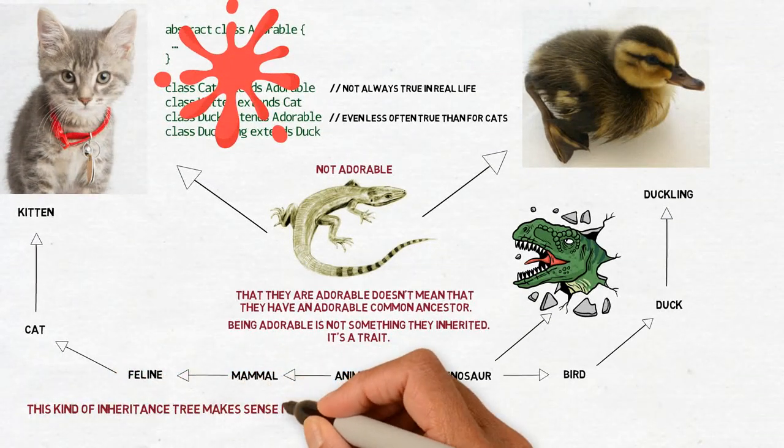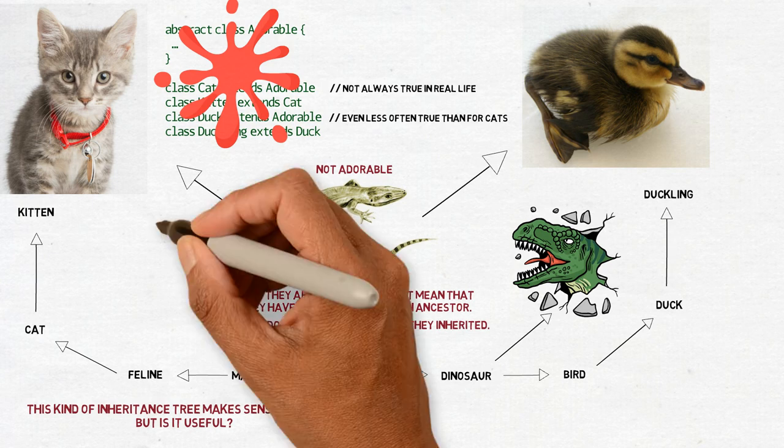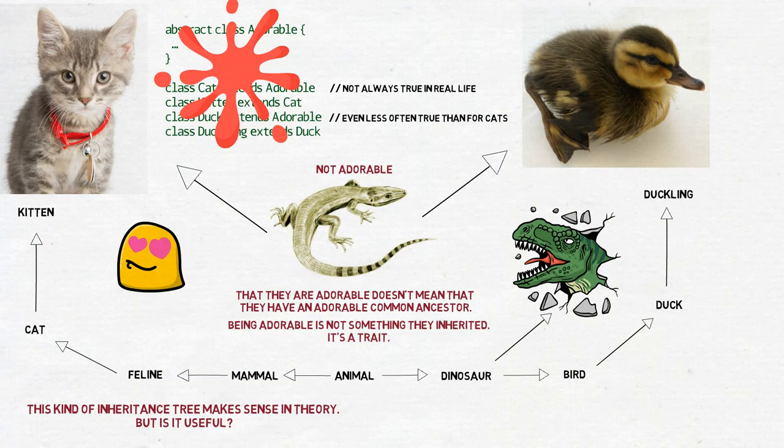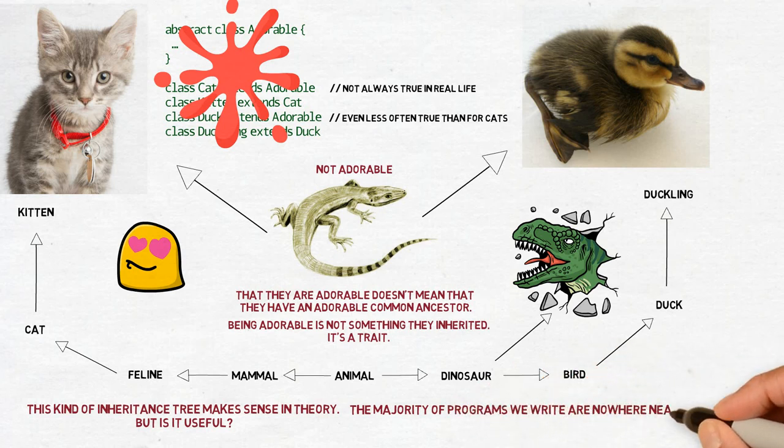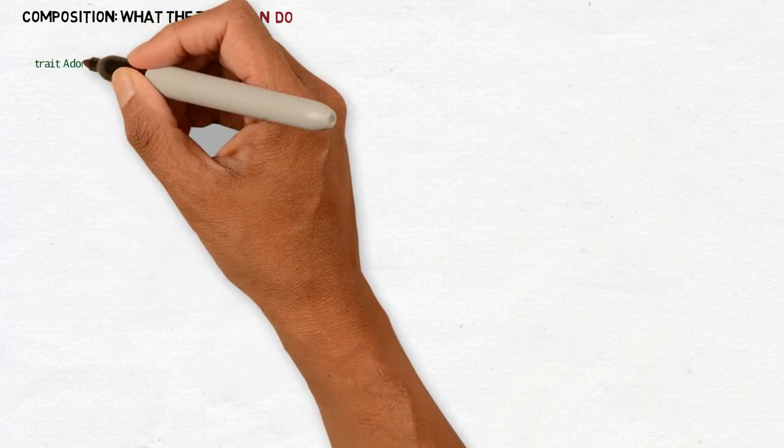This kind of inheritance tree makes sense in theory, but is it useful? When you look at an adorable photo of a kitten and duckling and your reaction is aww, do you think you go aww because they both come from a long line of extinct species? Or they are categorized into more and more generic groups of animals that are connected at some point? No. You go aww because they are adorable. It's simple as that. There's no inheritance involved. Translating this quite risky metaphor to programming, I would argue that the majority of programs we write are nowhere near so complex that they actually require deep inheritance hierarchies. The code that uses our data models is usually much more interested in what those data models can do than what they are in their essence.